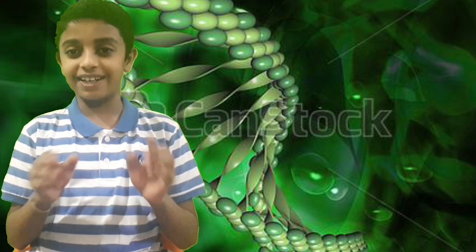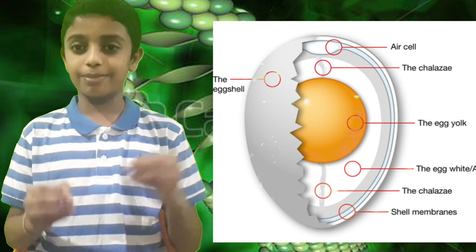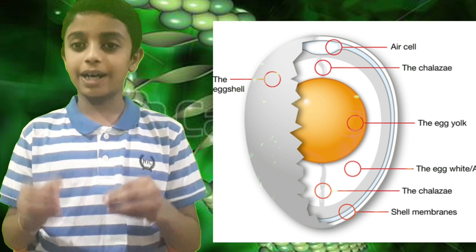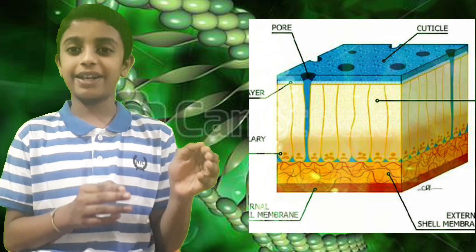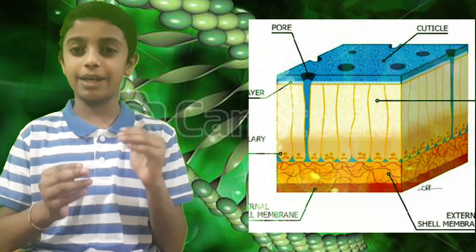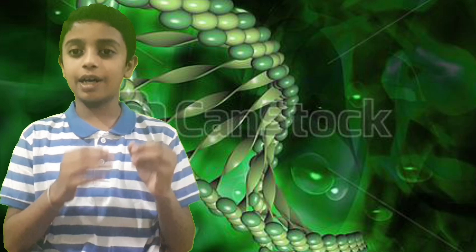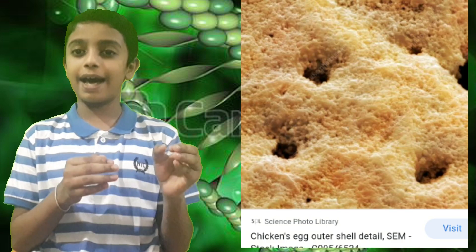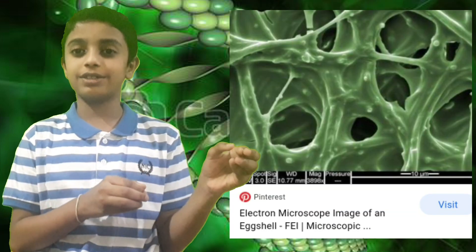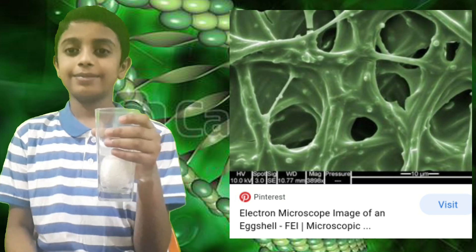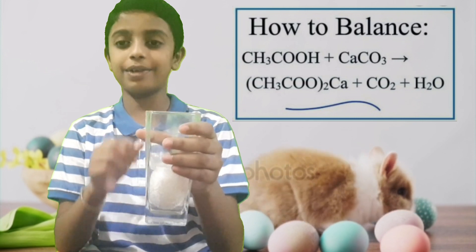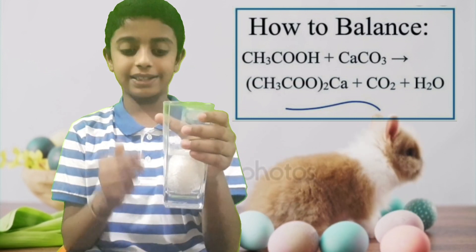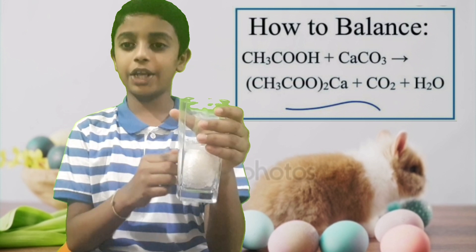Let me tell you the reason. As I said earlier, the outer coat of the egg shell is made up of calcium carbonate, which is stabilized by a protein matrix. This protein matrix is made up of a semi-permeable membrane. The outer calcium carbonate egg shell has 7,000 to 17,000 tiny pores. Vinegar is nothing but acetic acid. It reacts with the calcium carbonate and forms calcium acetate and carbon dioxide.